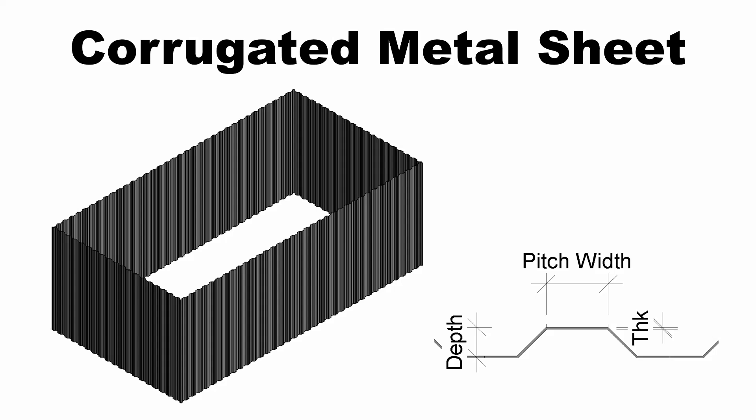Hello everyone. Today, I would like to show you how to create a corrugated metal sheet in Revit. In this video, I will create a corrugated curtain wall panel family and then load it into a project.